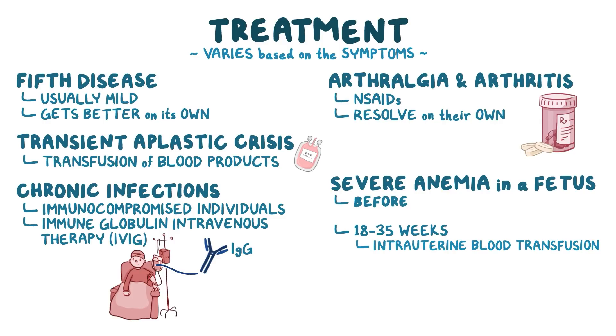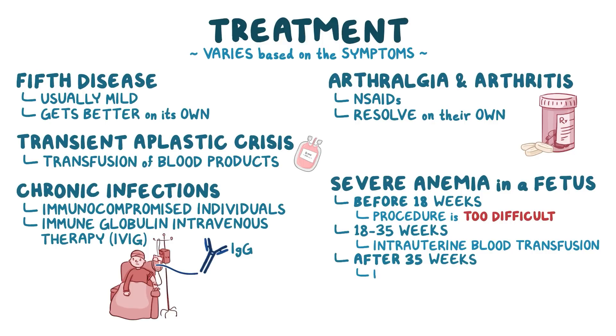Severe anemia in a fetus between 18 and 35 weeks of gestation can be treated with an intrauterine blood transfusion. Before 18 weeks, the procedure is too difficult technically. After 35 weeks, risks of transfusion are high compared to simply delivering the baby.